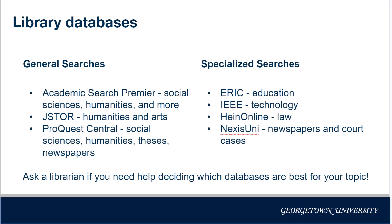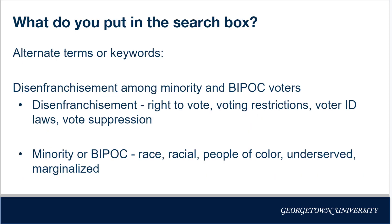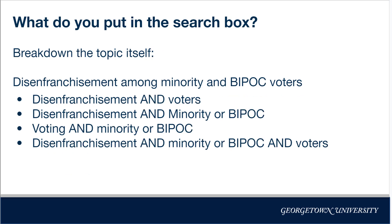You can always talk with a librarian to determine the best databases for your topic. Once you have decided on the databases to use, you can start searching. One of the hardest parts of doing research is figuring out which words to search. How you describe a concept versus what the authors call it can be different things. Searches with similar keywords can help expand your results. In this example, you can see alternate terms or keywords for a topic about disenfranchisement among minority and BIPOC voters.